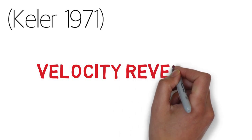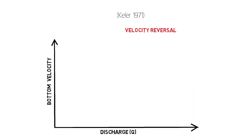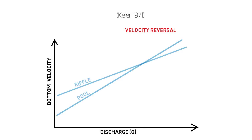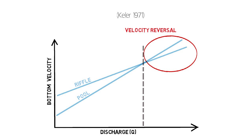In 1971, Keller proposed the velocity reversal mechanism. He measured the velocity of water flowing at the bottom of pools and riffles in a creek. At low flows, water was faster over riffles than pools. But with increasing discharge, the velocity over pools increased faster than over riffles. So when the stream filled up to a certain level, water flowed just as fast at the base of the pools. Above that point, velocity reversal occurred, where water moved faster over pools than riffles. So at low flows with low velocities, coarse material like gravel isn't really transported by water. But at high flows, when coarse sediment can be picked up by swift-moving water, it is preferentially deposited on riffles where the velocity slows.